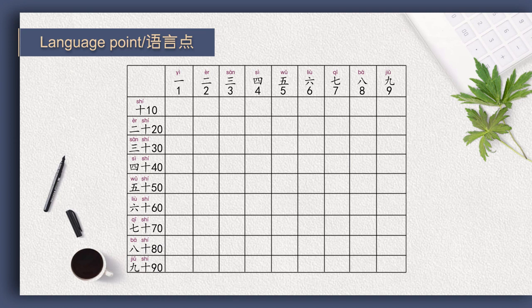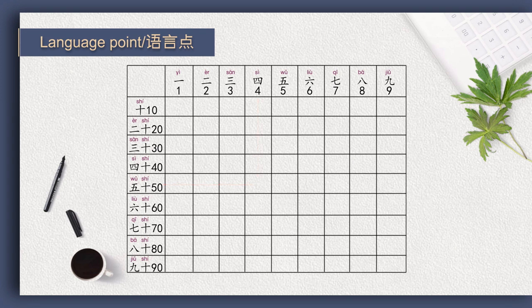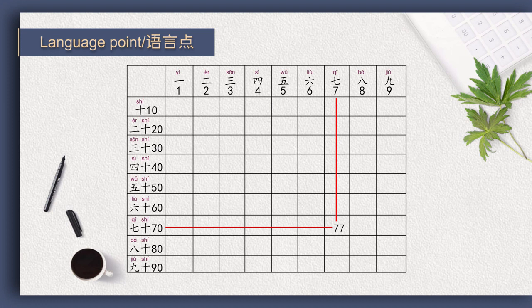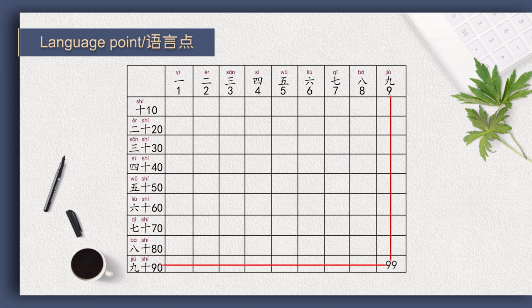How do you read 22 in Chinese? We can first read 20 then read 2 after it. So 22 is 二十二. Then 35 is 三十五, 48 is 四十八, 54 is 五十四, 63 is 六十三, 77 is 七十七, 86 is 八十六, 99 is 九十九.